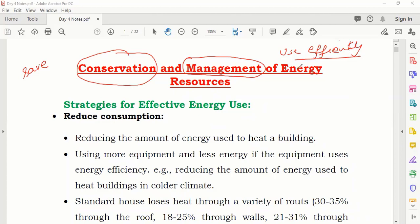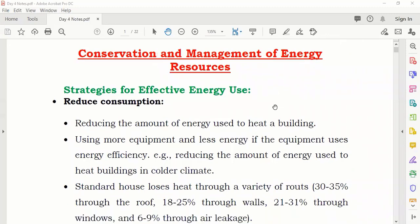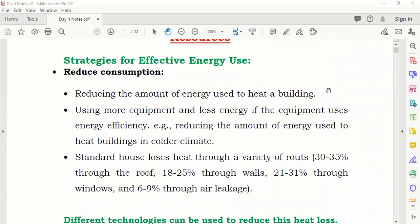So we'll talk about this one. What are the ways by which you can use the energy in a good way and you can reduce its consumption? Number one, reducing the amount of energy used to heat a building.